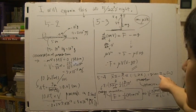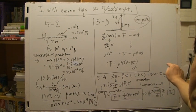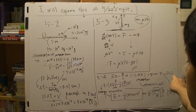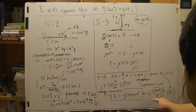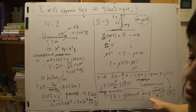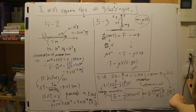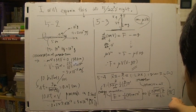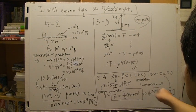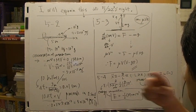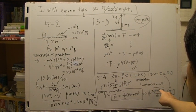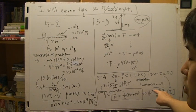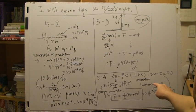If given x in meters, units meter, velocity is meter per second. So M plus M needs to be under a square root.